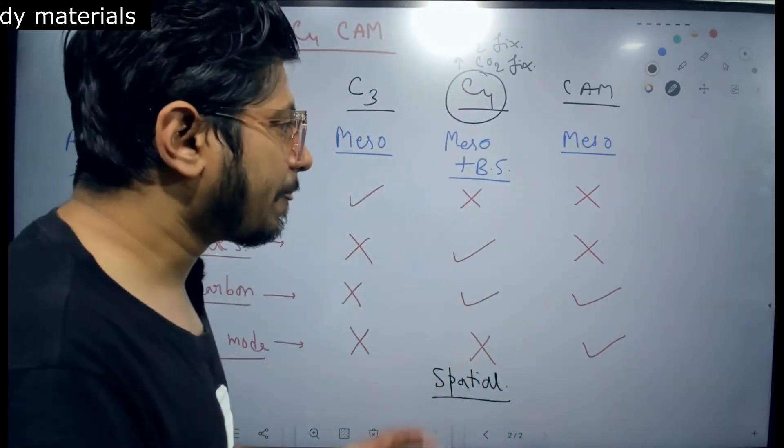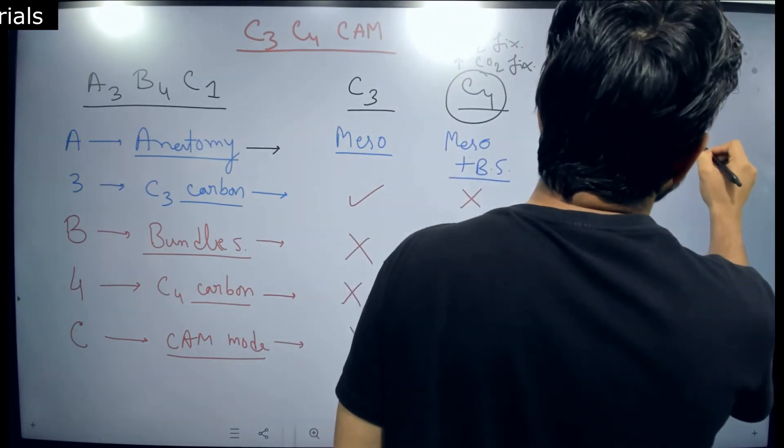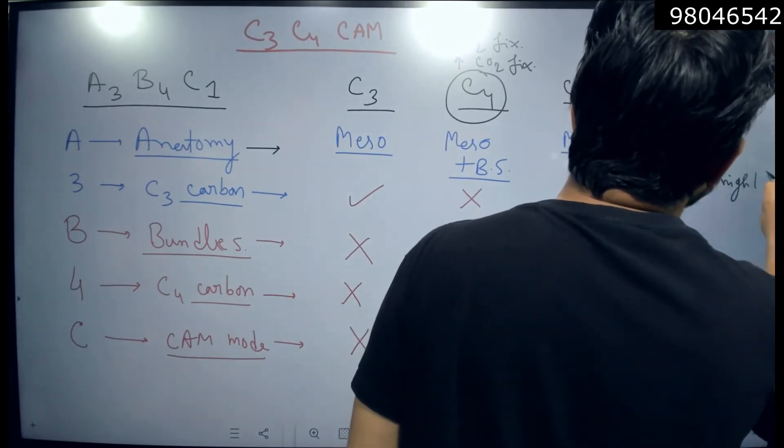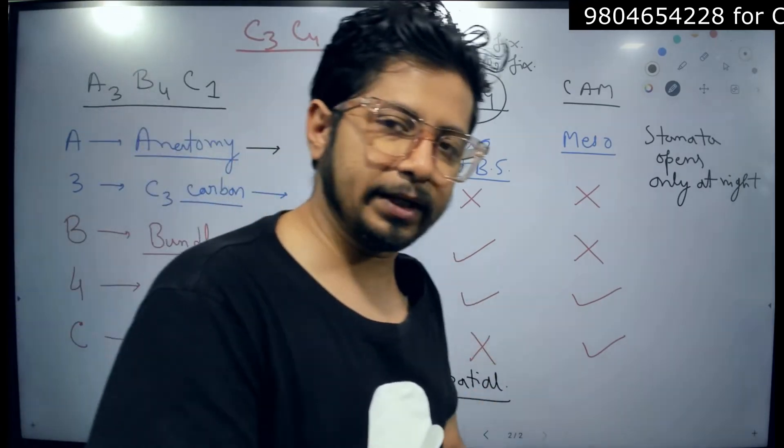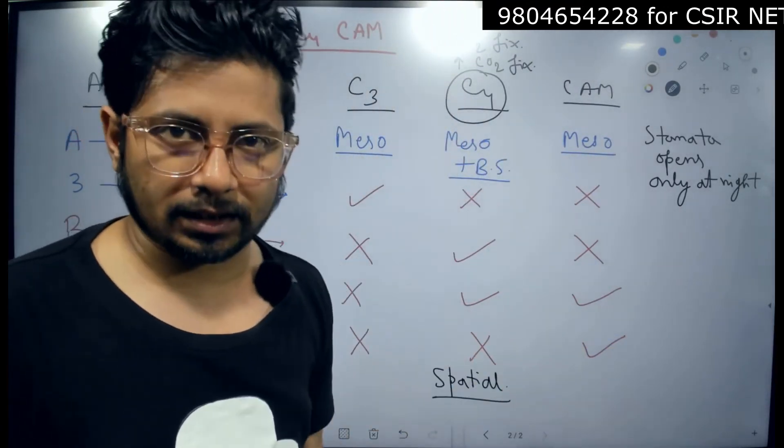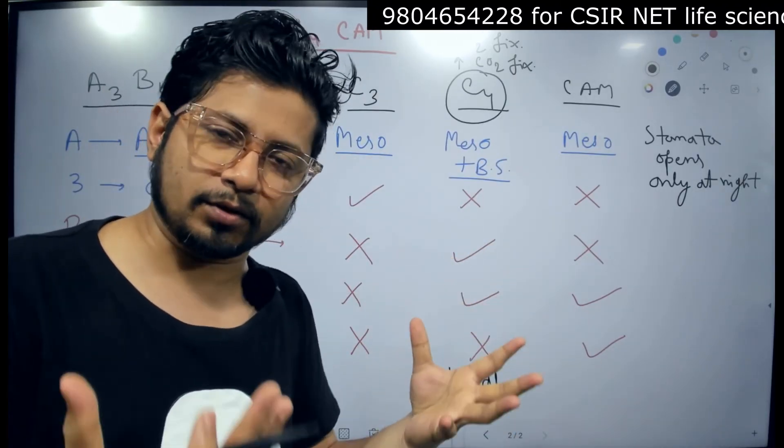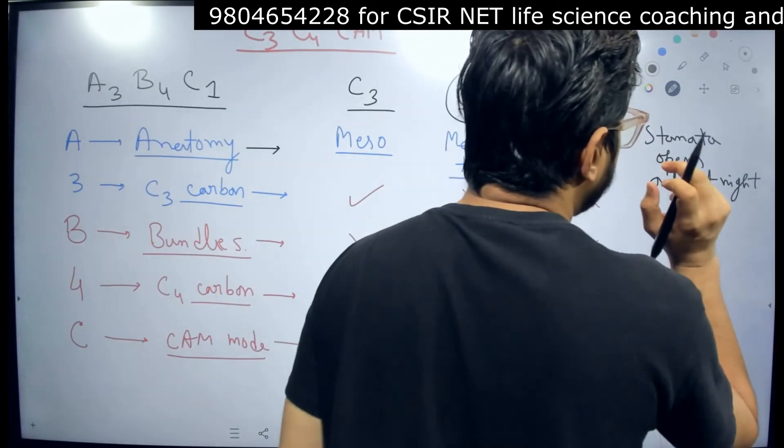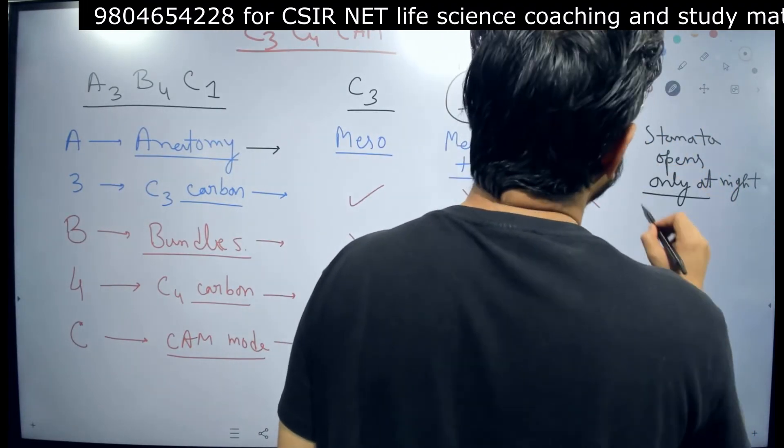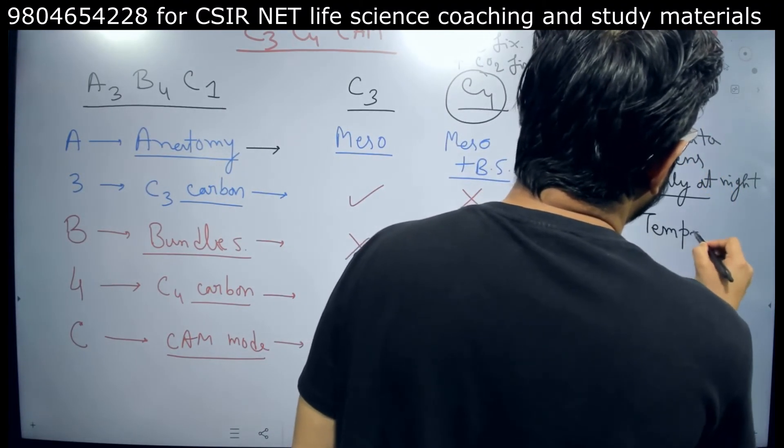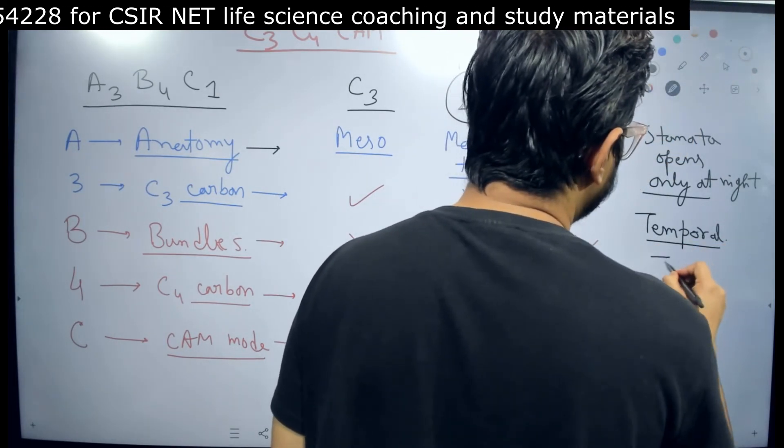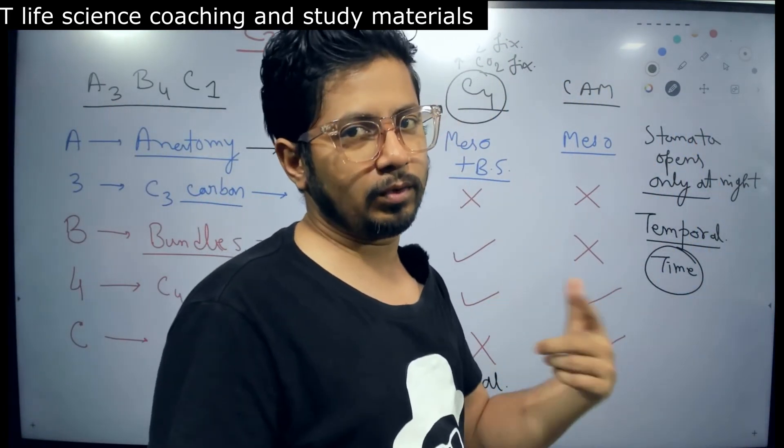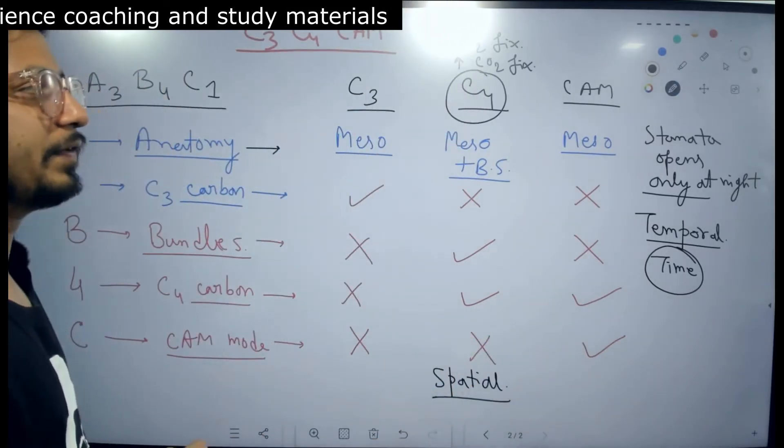While in case of CAM plants their stomata opens only at night where the chance of water loss through the stomatal opening will be low in climates like desert, very hot and dry environment. If they open the stomata during daytime then there will be water loss from the plant. To prevent that they open the stomata only during night. So in case of CAM plants they have a temporal isolation or temporal separation. Temporal why? Based on separation based on time. Because stomata opens at night the process will take place at night.